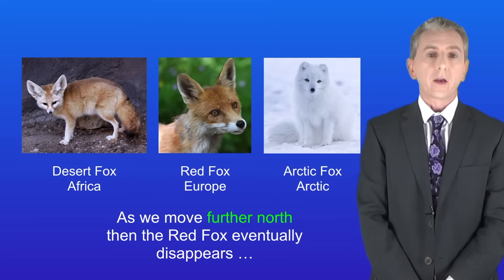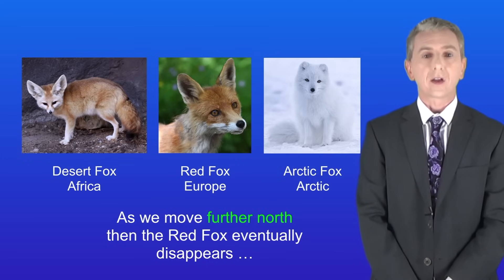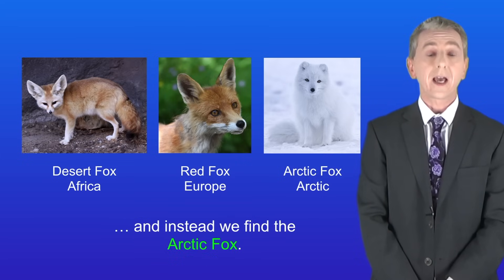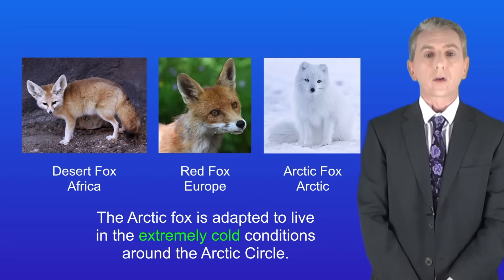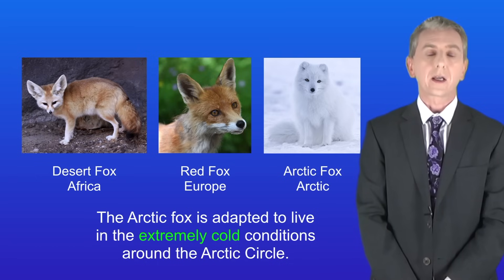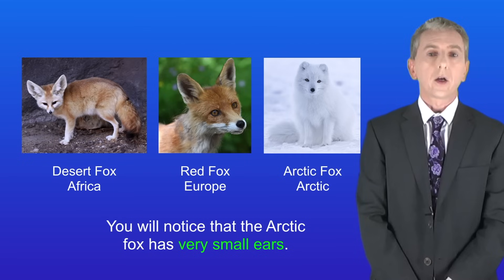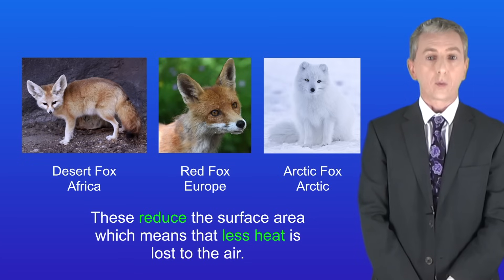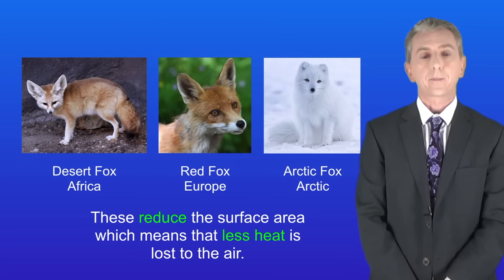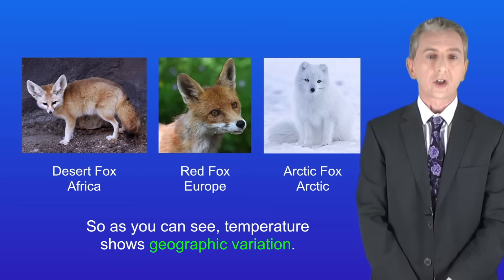As we move further north, the red fox eventually disappears and instead we find the arctic fox. The arctic fox is adapted to live in the extremely cold conditions around the arctic circle. You'll notice it has very small ears — these reduce the surface area, meaning less heat is lost to the air. So as you can see, temperature shows geographic variation.